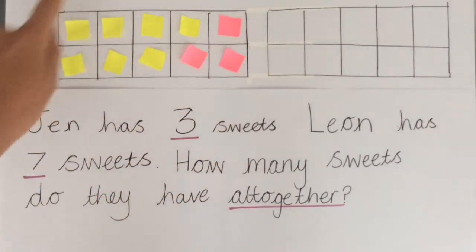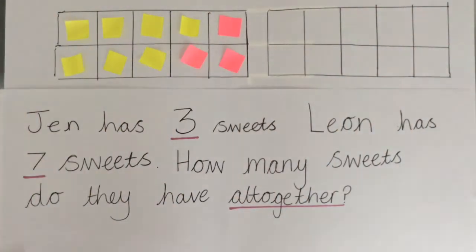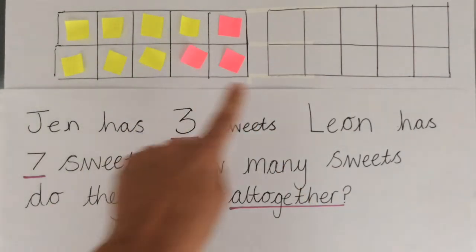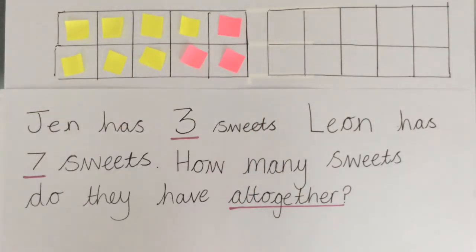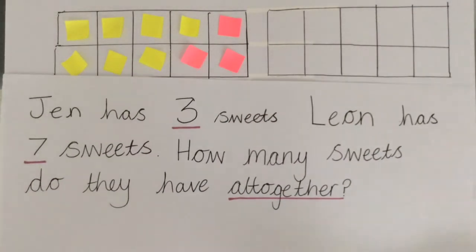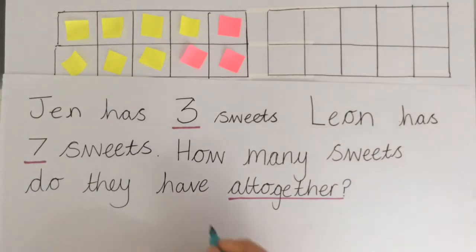So there's Leon's seven sweets and there's also Jen's three sweets. So now we need to count them all together. Now I can see that the ten frame is full. So we know that there's ten sweets there all together because it's full.